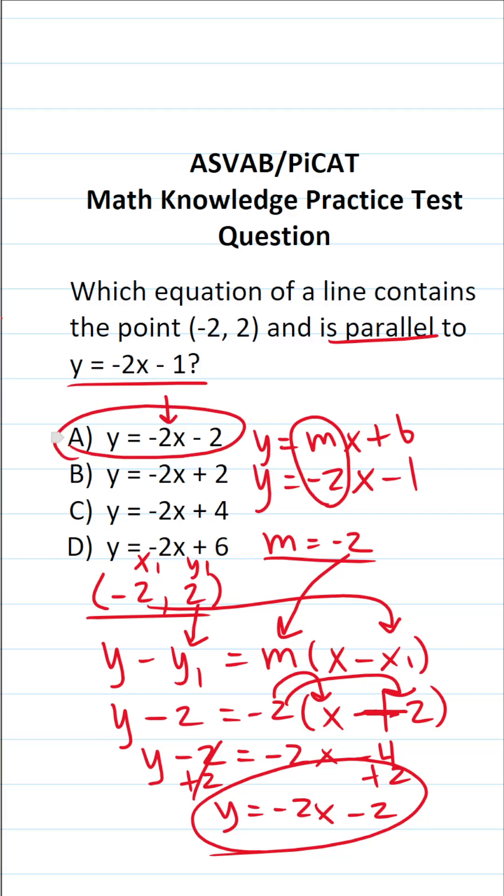Which as it happens is answer choice A. Again, on the ASVAB and PiCAT, you're not given a calculator or reference sheet, so you do have to be familiar with equations of lines in slope-intercept form, and you also have to know the point-slope equation as well.